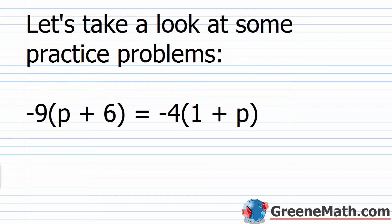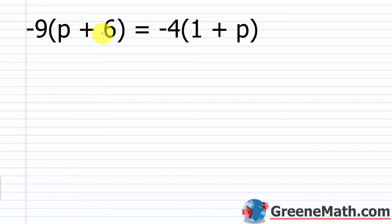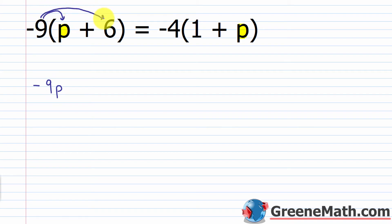Let's look at our first practice problem: negative 9 times the quantity P plus 6 equals negative 4 times the quantity 1 plus P. The variable here is P. We start by simplifying each side separately using the distributive property. Negative 9 times P is negative 9P, and negative 9 times 6 is negative 54. On the right side, negative 4 times 1 is negative 4, and negative 4 times P is minus 4P.